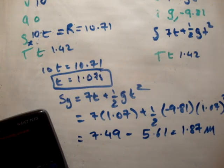1.87 meters. That is s sub y. At a time 1.07 seconds, and at that time, the range is equal to 10.71 meters. And that's that.